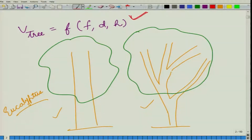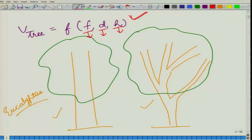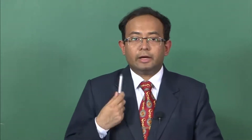If you wanted to find out the volume of your trees using this formula, you would have to measure the form factor for every tree, the diameter for every tree, and the height for every tree. Is there any way of simplifying this? We want simplification because measuring all these things for every tree becomes very tedious. At the same time, we do not want a very high level of accuracy and precision, because wood is not a very expensive material.